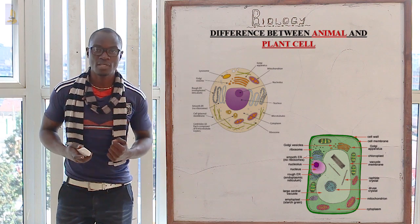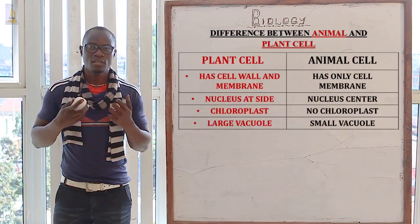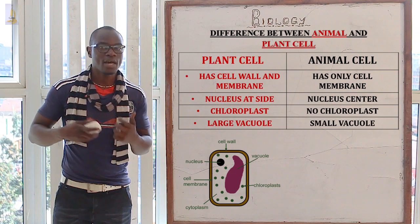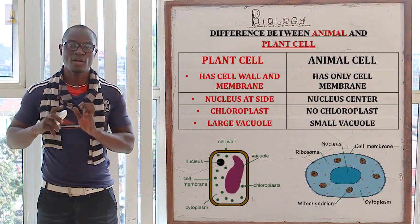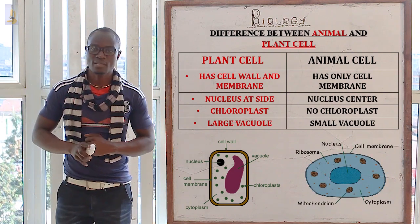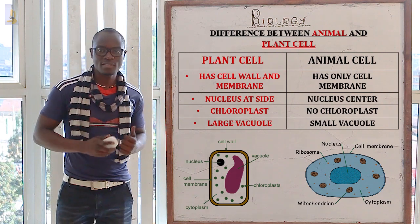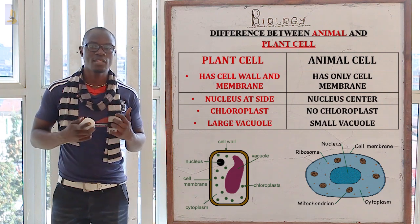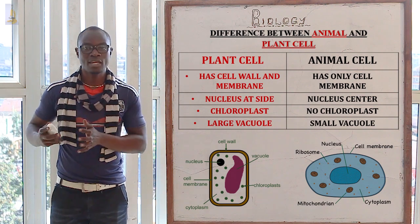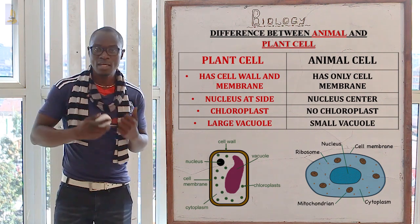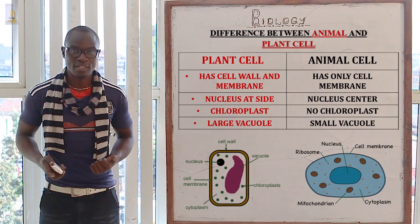Let's look at the differences between the plant cell and the animal cell. The plant cell has a cell wall while the animal cell does not have a cell wall — it only has a cell membrane. In the plant cell, the nucleus is located towards the side of the cell, while in the animal cell the nucleus is centrally located.